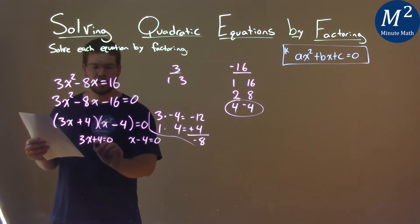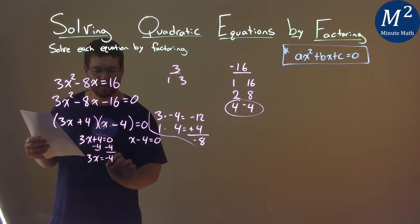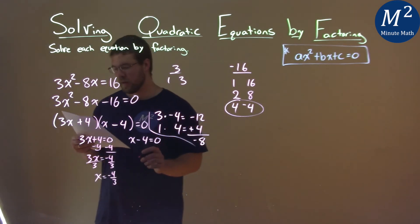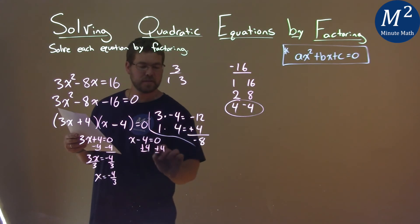And let's solve. So subtract a 4 to both sides, and 3x equals a negative 4. Divide both sides by 3, and x equals a negative 4 thirds. Add a 4 to both sides. The second equation, not too bad. x equals a positive 4.